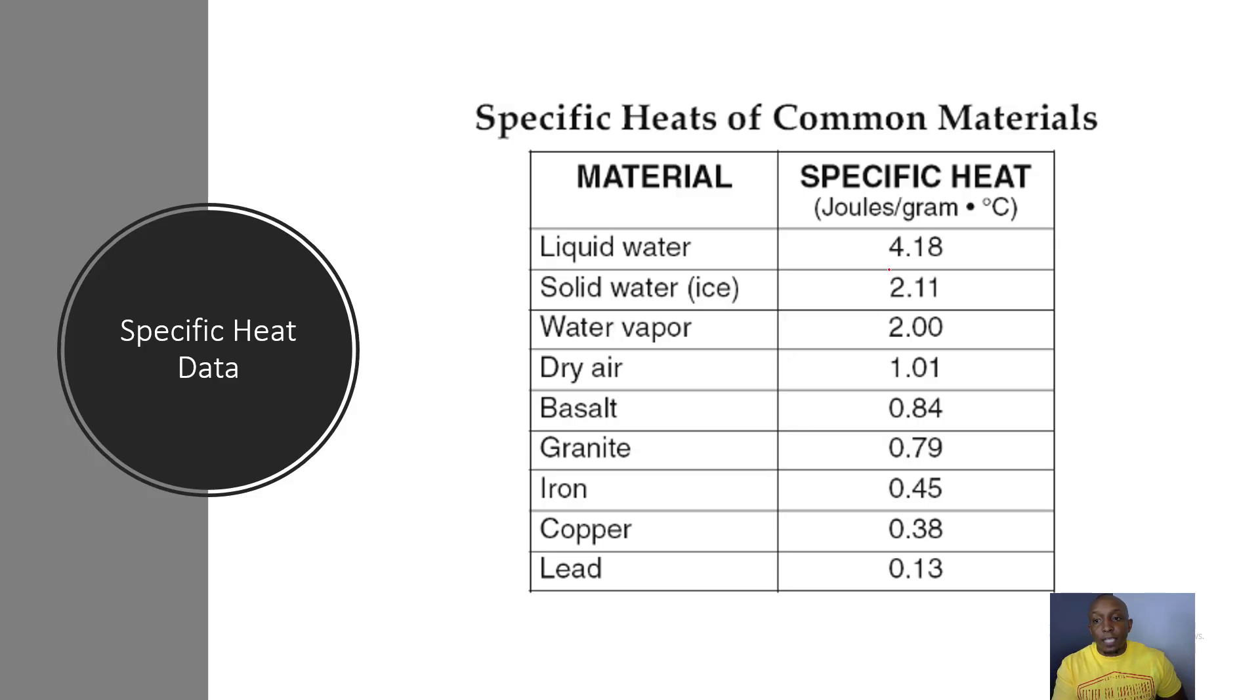If we take a look at this, as we go down this data chart, notice the number gets smaller. Lead has a specific heat of 0.13 joules per gram degrees Celsius, which means that it is going to heat up the fastest. But as we go up this chart, notice the specific heat data number gets higher and higher. Liquid water has a specific heat of 4.18 joules per gram degrees Celsius. That means it's going to heat up the slowest according to the other specific heat data on this chart.